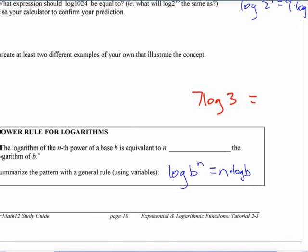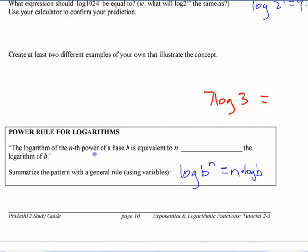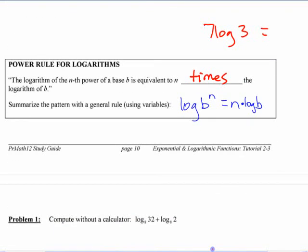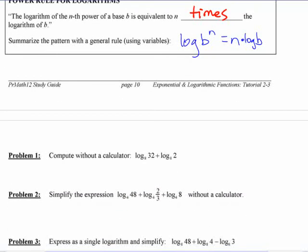Now, the wording of this one may be a bit trickier. The logarithm of the nth power of a base b is equivalent to n times the logarithm of b.